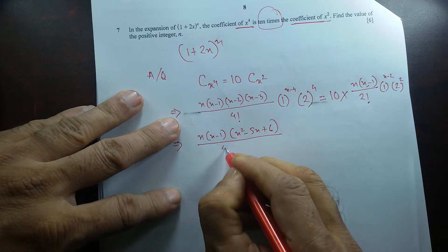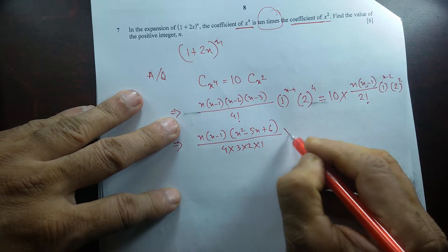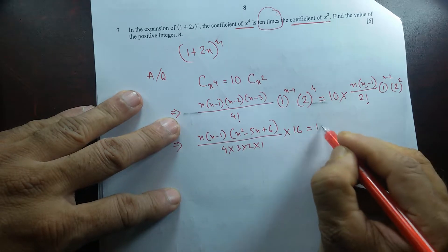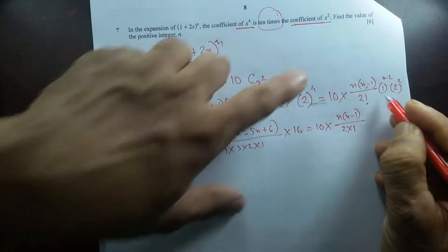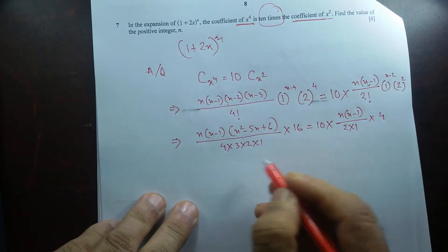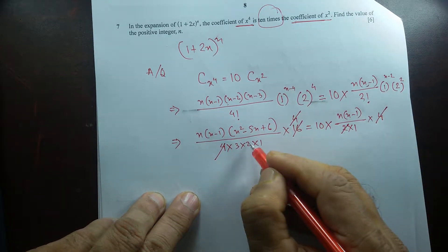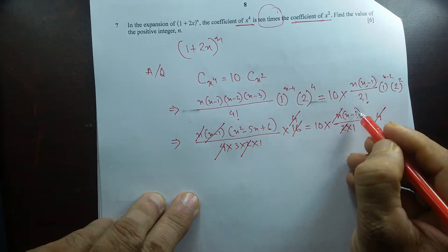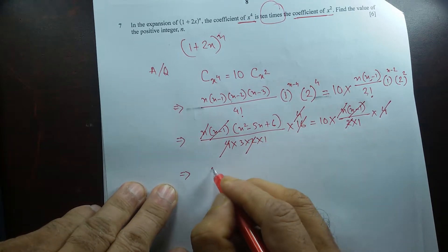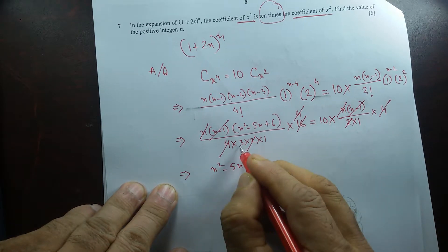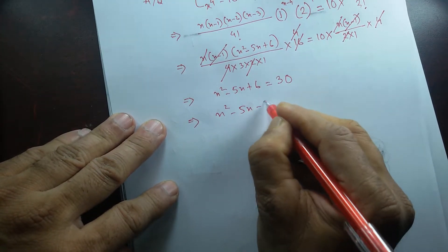The denominator on the left becomes 4 times 3 times 2 times 1, and 2 to the power 4 is 16. On the right side, 10 times the remaining term with 2 factorial equal to 2 times 1, and 2 squared is 4. After cancelling: 4 and 4, 2 and 2, n and n, (n minus 1) and (n minus 1). I have n squared minus 5n plus 6 on the left, and 3 times 10 equals 30 on the right. Bringing 30 to the left: n squared minus 5n minus 24 equals zero.